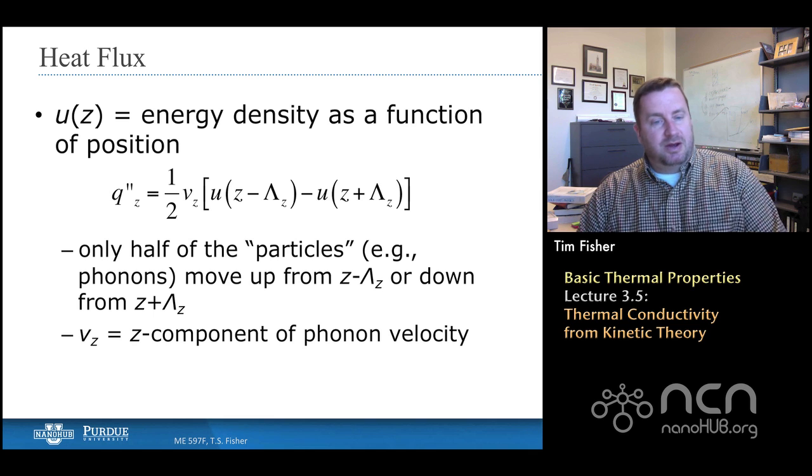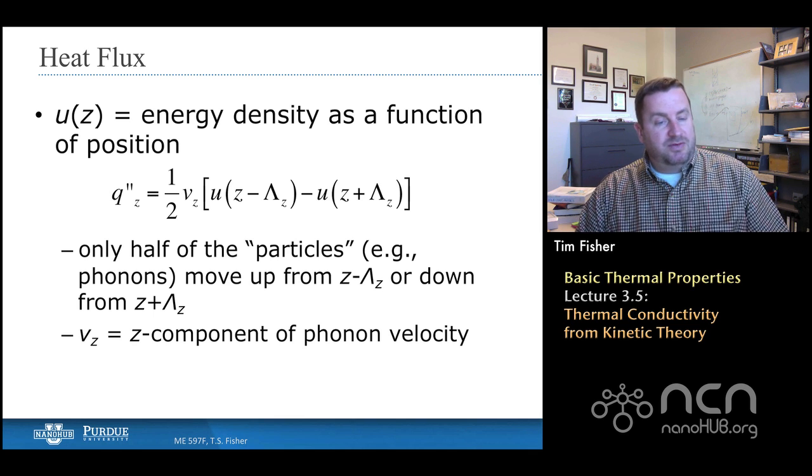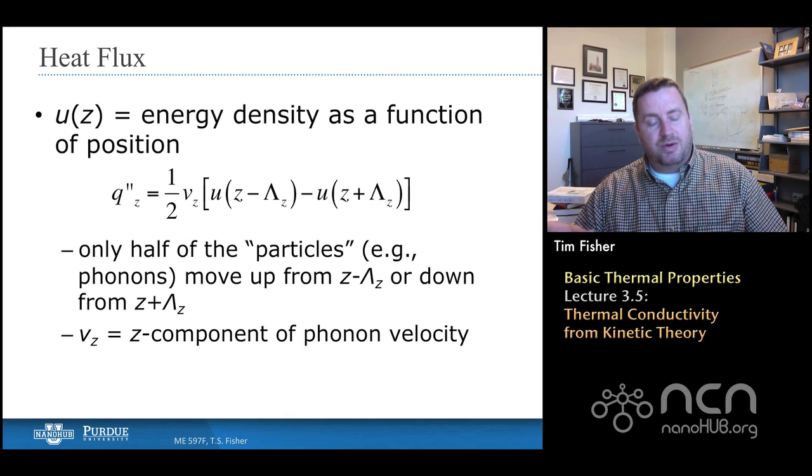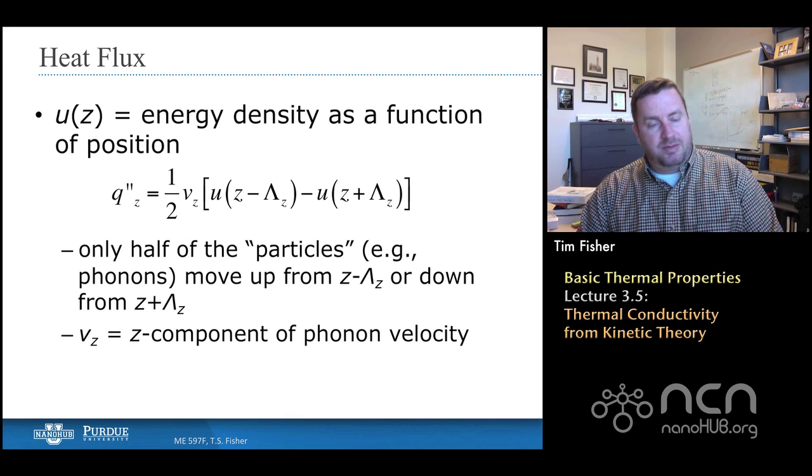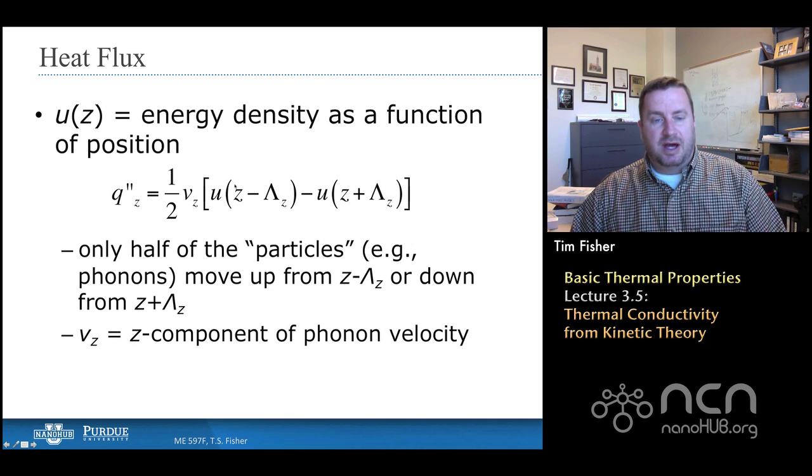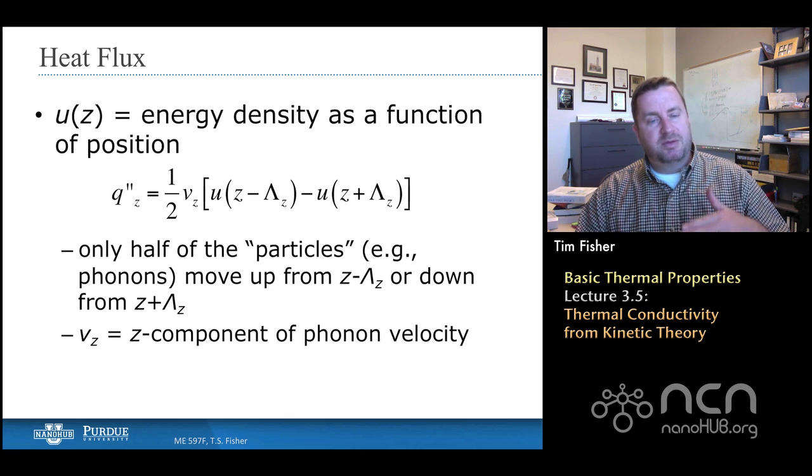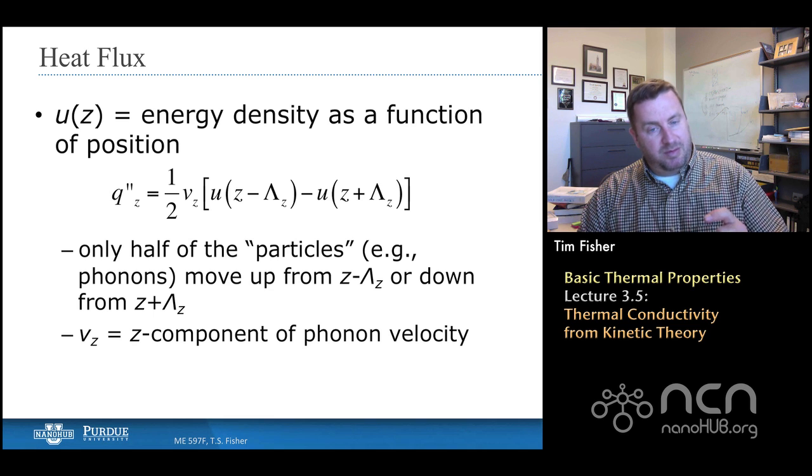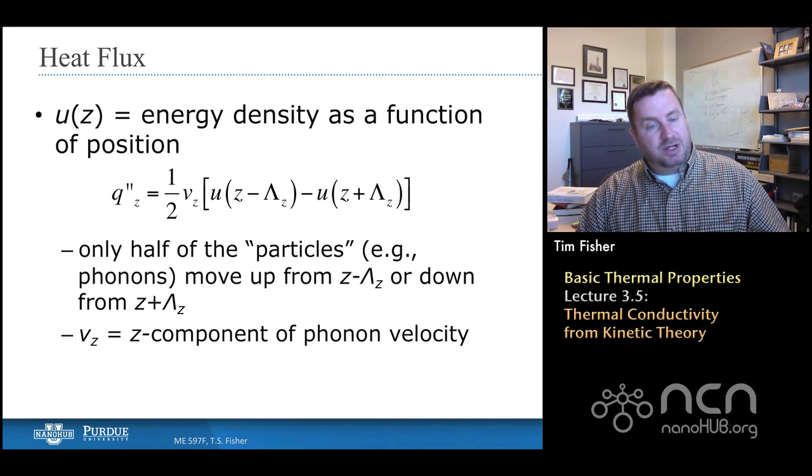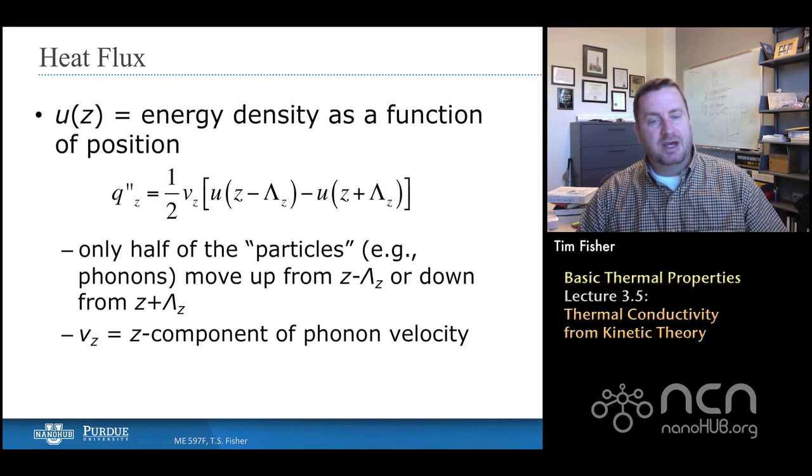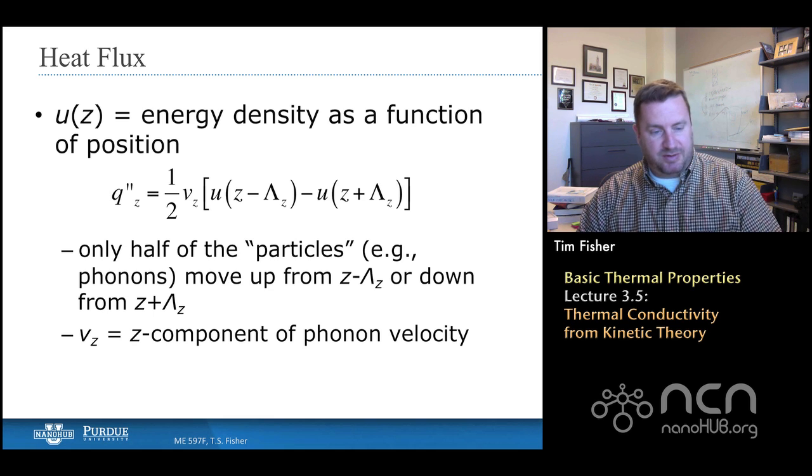Now I can't just take that and say velocity times internal energy density is going to give me a heat flux, because in this thermal energy field, the carriers are moving all over the place. They'll be moving not just in one direction, like from down to up, they'll also be moving up to down, so I have to take a balance of those two directions. So we have a difference equation where we're going to take the difference between the internal energy density at those two planes, above and below the z-plane, separated from the z-plane by the distance of the mean free path in the z direction, plus and minus. We'll take the difference of those, multiply by the velocity, and then there's a one-half term, because only half of the particles are moving in the direction of interest.